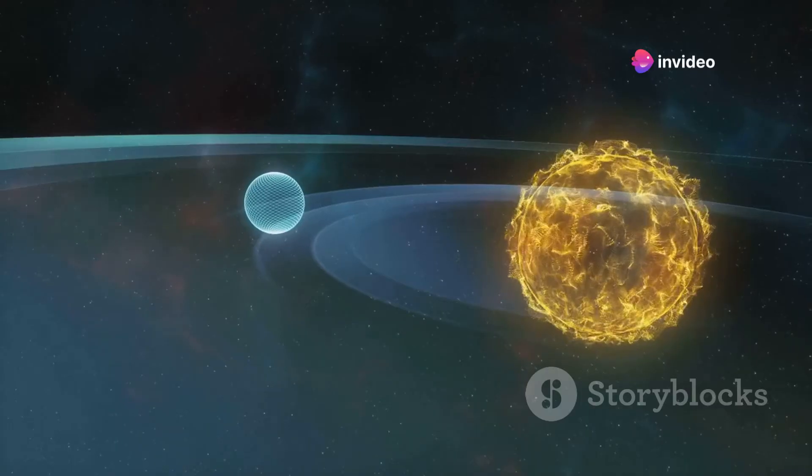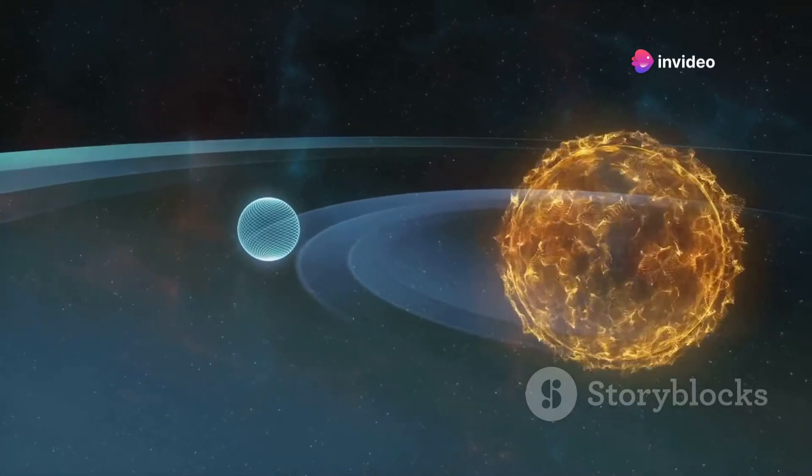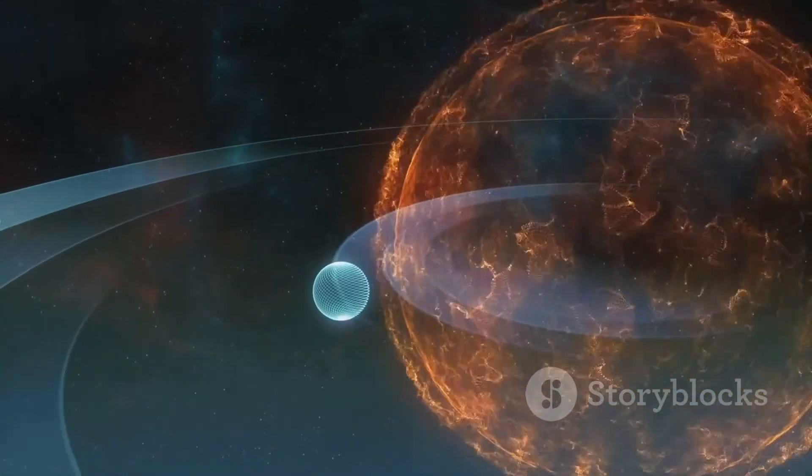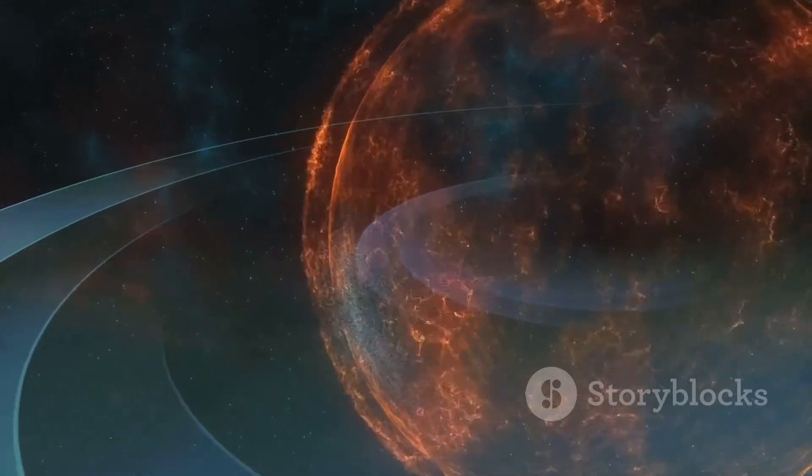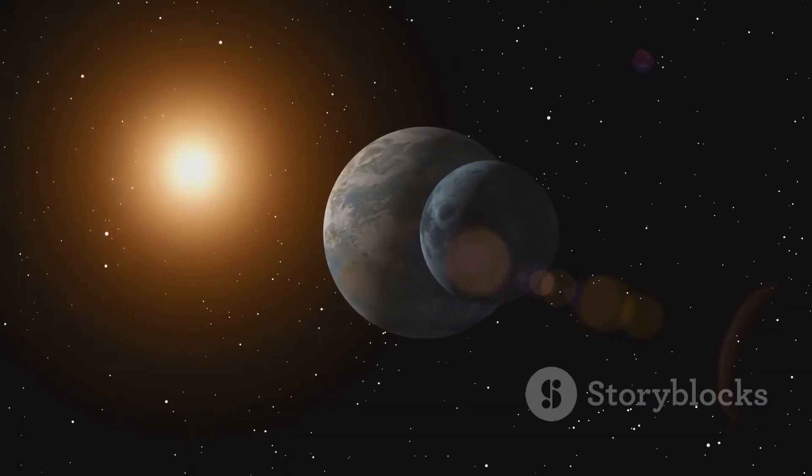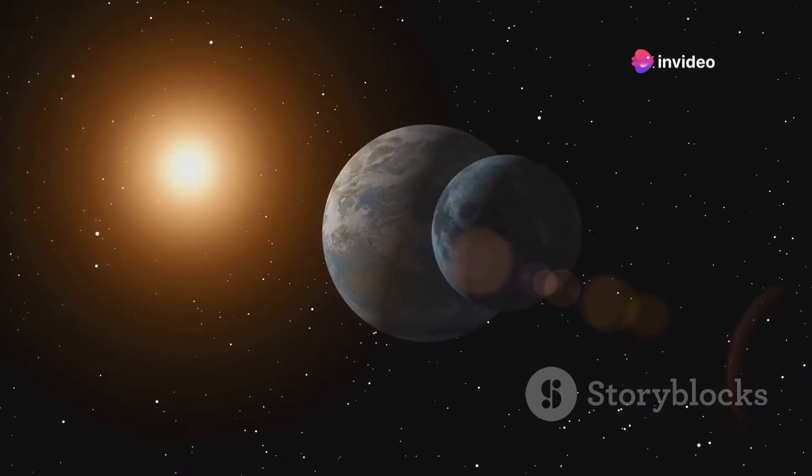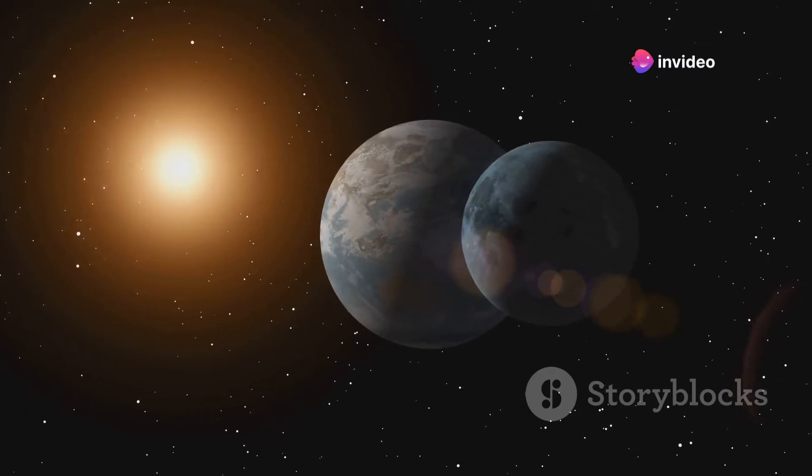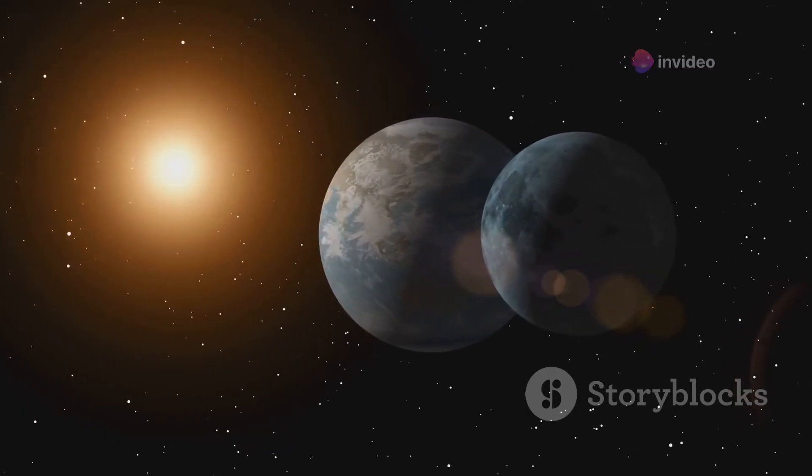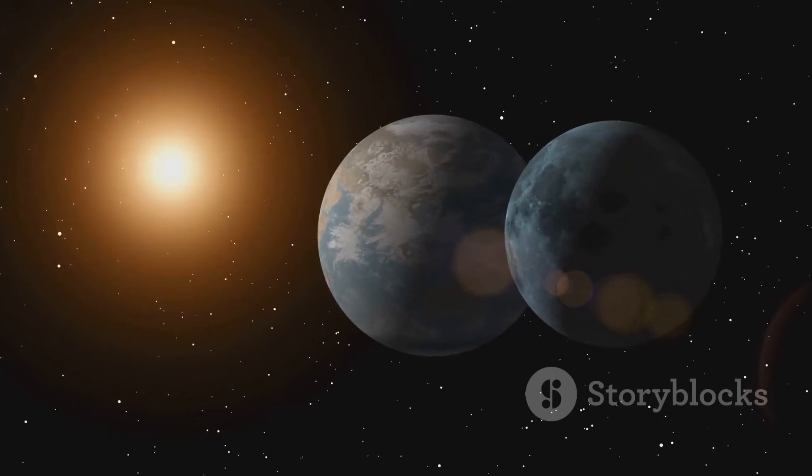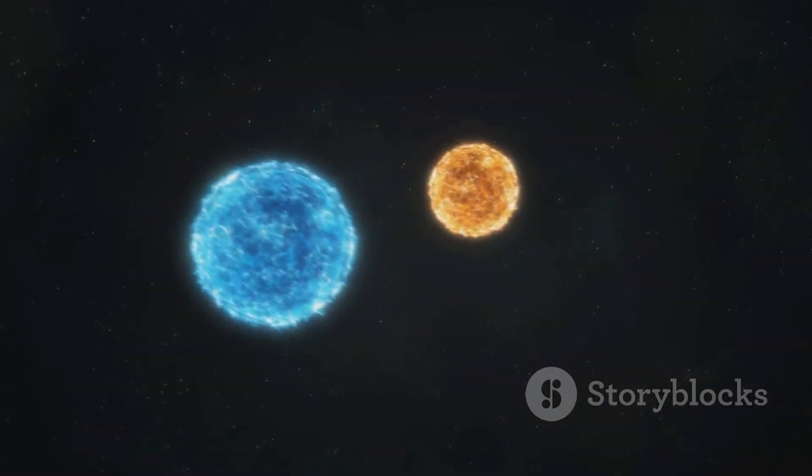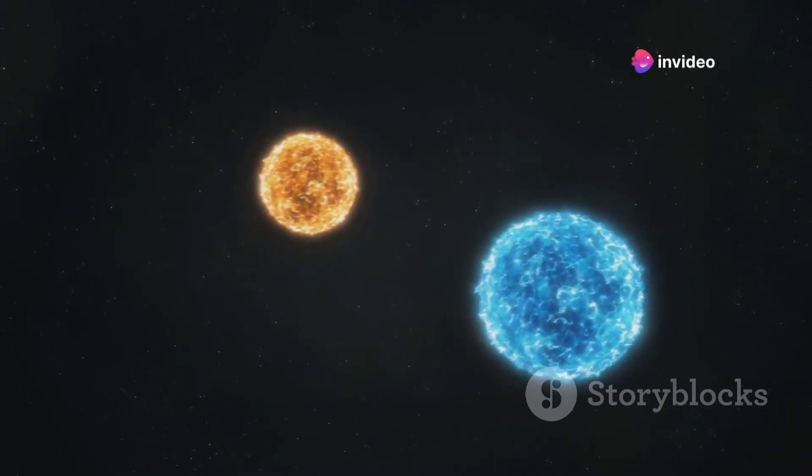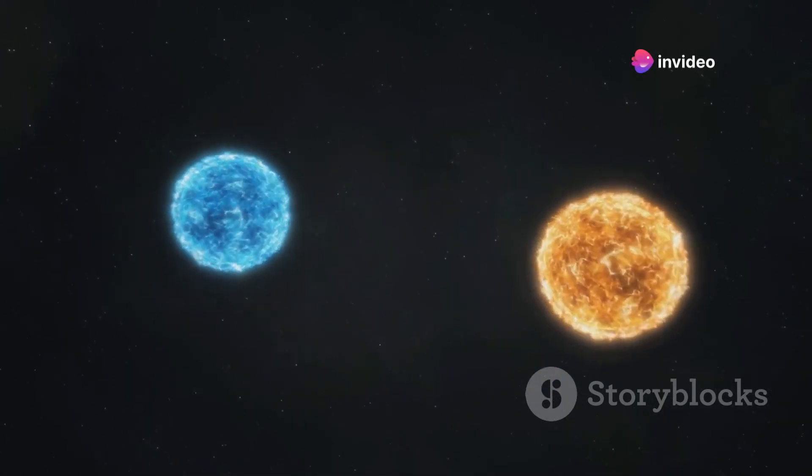As Earth assumes this colossal form, its gravitational dominance could rival that of the Sun, setting the stage for a possible binary system. Picture two titanic bodies, the Sun and an Earth as massive as it, locked in a gravitational waltz. This duo would orbit around a common center of mass, lying somewhere between them, depending on the precise masses and distances involved. The dynamics of such a system are a playground for astrophysicists, presenting scenarios that challenge our understanding of binary stars and dual-body systems.